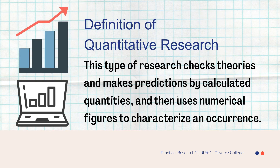This is the definition of quantitative research. This type of research checks theories and makes predictions by calculated quantities, and uses numerical figures to characterize an occurrence. Statistical analysis is used to analyze the numbers derived from the results. Objectivity of the test in this respect is a guarantee. Quantitative approaches rely on objective measures and numerical analysis of data obtained by questionnaires or surveys and generalization of findings through different classes.